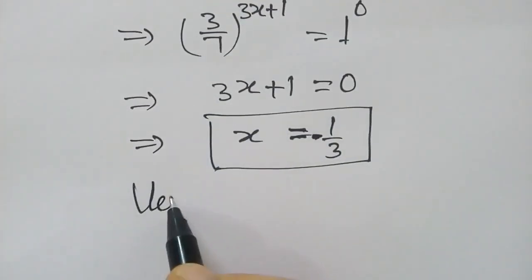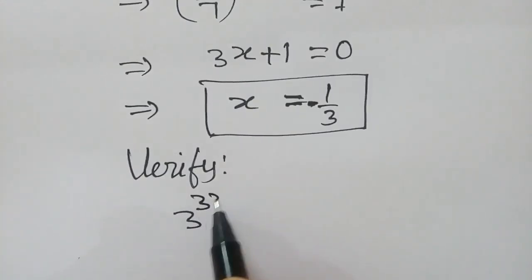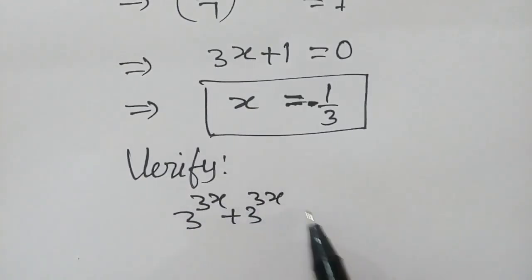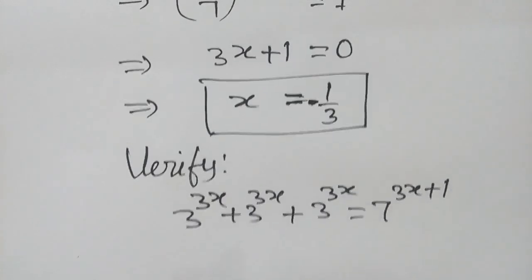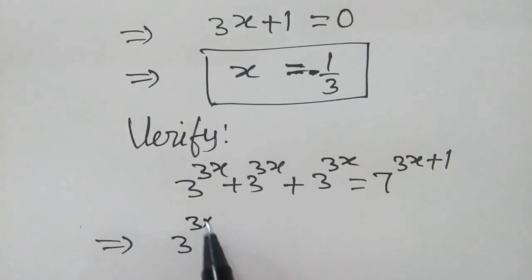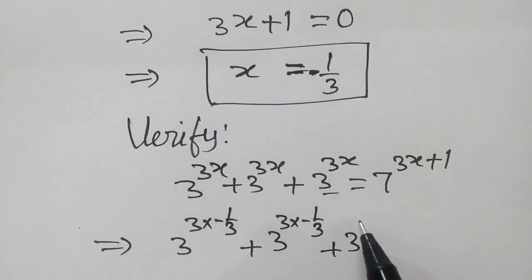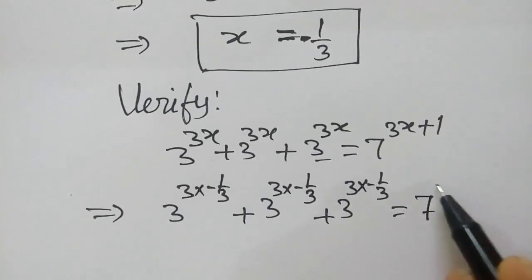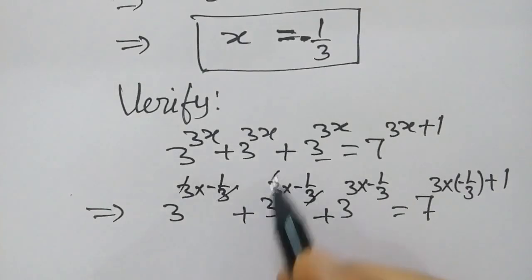If we verify or check: 3 to the power 3x plus 3 to the power 3x plus 3 to the power 3x is equal to 7 to the power 3x plus 1. So, 3 to the power 3 into minus 1 by 3, plus 3 to the power 3 into minus 1 by 3, plus 3 to the power 3 into minus 1 by 3 is equal to 7 to the power 3 into minus 1 by 3 plus 1. This cancels.